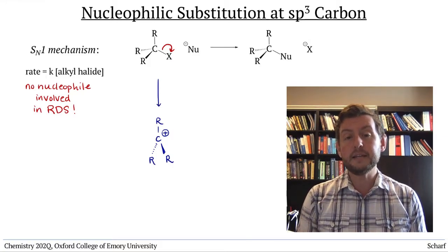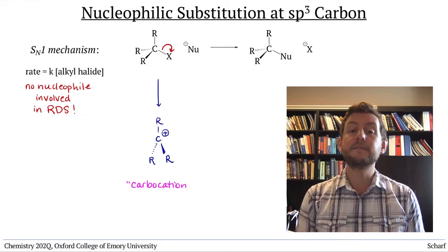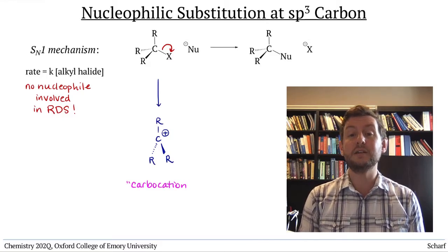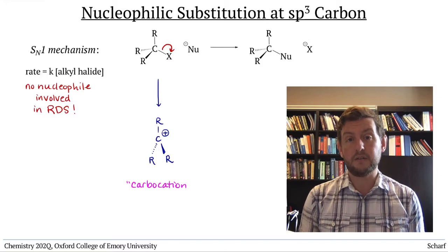This intermediate, called a carbocation, is not very stable. It has a very low energy LUMO, an empty p orbital associated with a positive charge. So it is desperate for electrons.